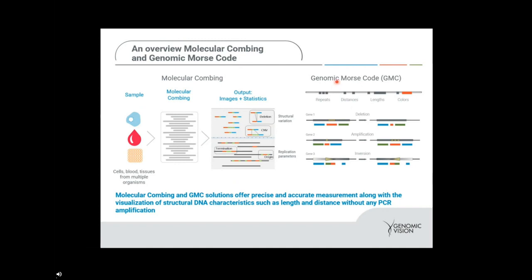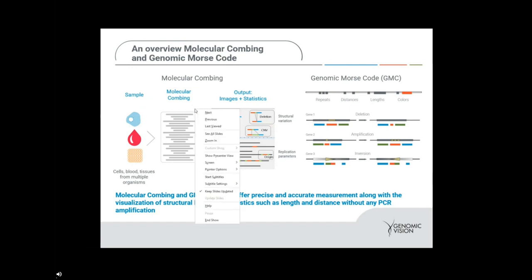Genomic Morse code, along with the constant stretching factor in molecular combing, enables an accurate and reproducible measurement of the length of the probes and the gaps that occur in between them. This means we can observe any change in structural variation or DNA characteristics without performing any PCR amplification.